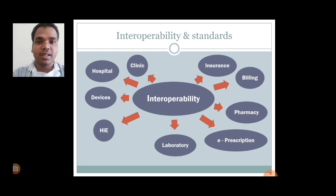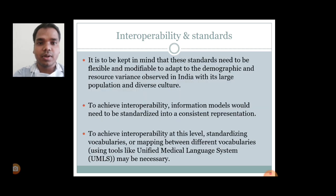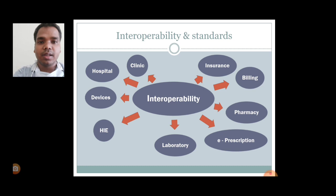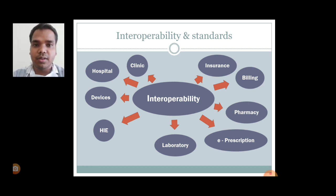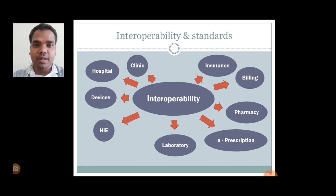Such departments include the insurance department, billing department, pharmacy department, and e-prescription. Then we use laboratory, HIE, devices, hospital, and clinics. These are the various departments in which the interoperability system is used to maintain health records from various health organizations.